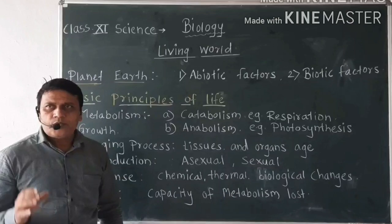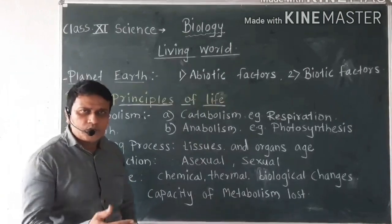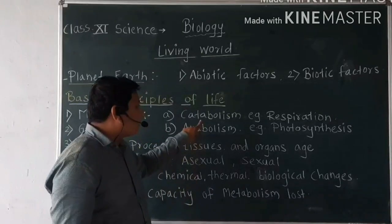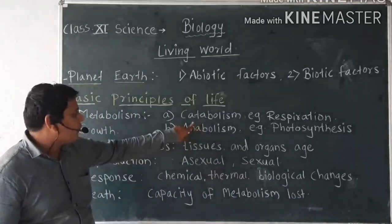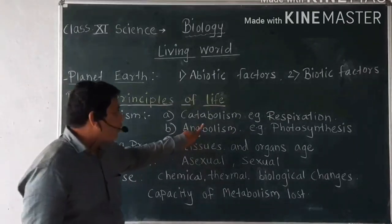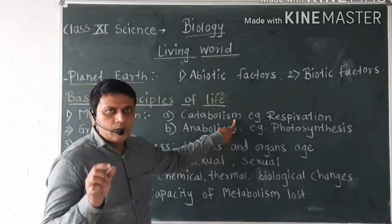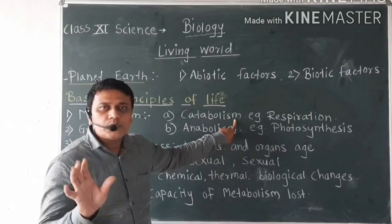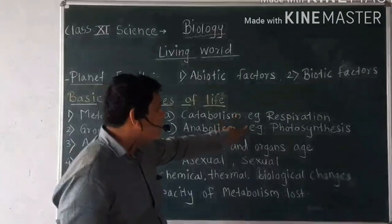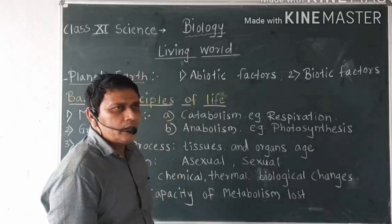Metabolism consists of two types. The first one is catabolism and the second one is anabolism. Catabolism means the conversion of biomolecules into a simpler form, or it is the breaking down of biomolecules. For example, respiration — plants as well as animals carry out the process of respiration.